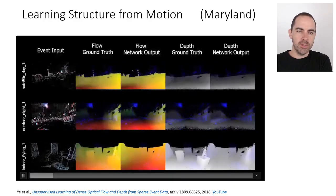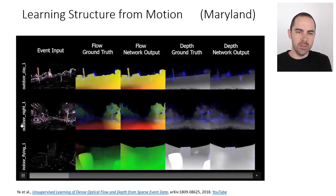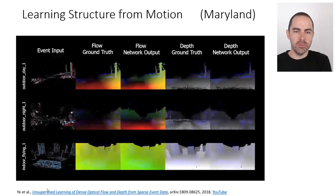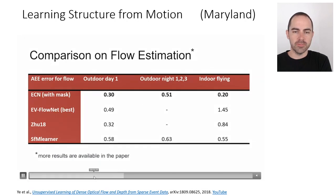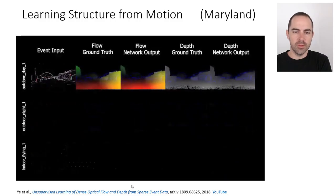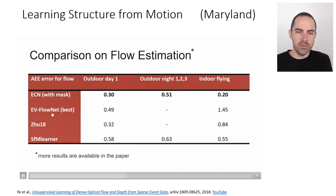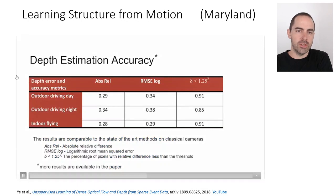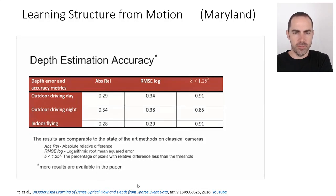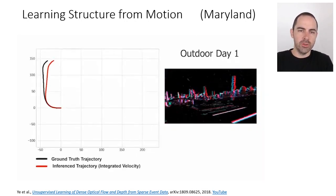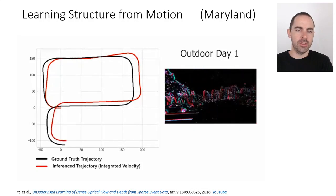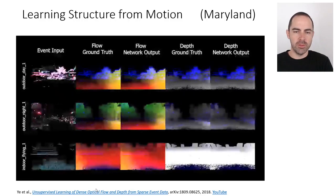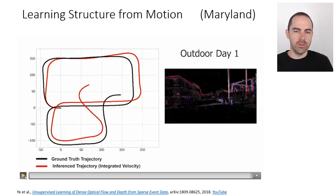Results are shown on different sequences from the MVSEC dataset: indoor flying, outdoor day, and outdoor night. The network's estimated flow and depth are compared to ground truth, and also benchmarked against EV-FlowNet. For ego-motion estimation, velocities are integrated to produce a trajectory compared against GPS ground truth. There is some drift, but overall the results look reasonable.